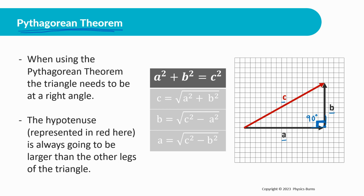The hypotenuse, represented in red, is always going to be larger than the legs. In this case, vector c is the hypotenuse and is always bigger than vector a and vector b. The formula is a squared plus b squared equals c squared. One thing to note: the variables won't always be a, b, and c — but whatever the hypotenuse is, one leg squared plus the other leg squared equals the hypotenuse squared.